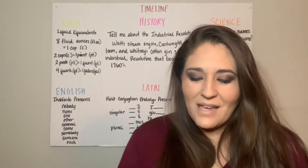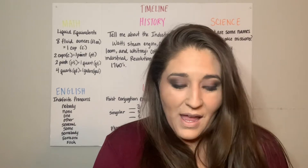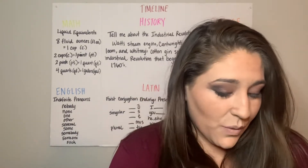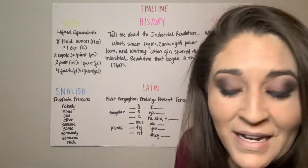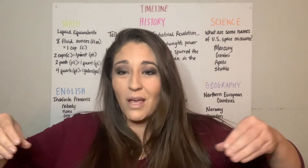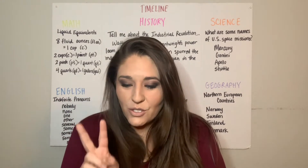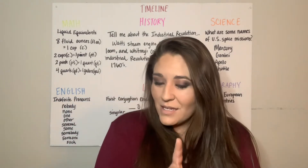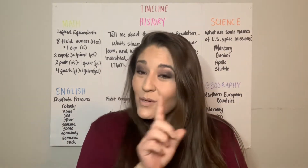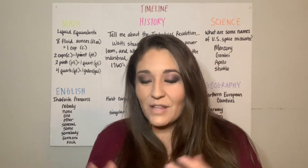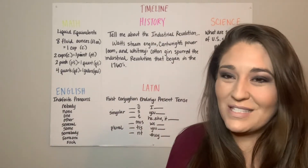We sang the song to Happy Birthday: eight fluid ounces equals one cup, two cups equals one pint, two pints equals one quart, four quarts equals one gallon. Then I lined them all up on the floor and we went through them again: eight fluid ounces equals one cup, two cups equals one pint, two pints equals one quart, four quarts equals one gallon.